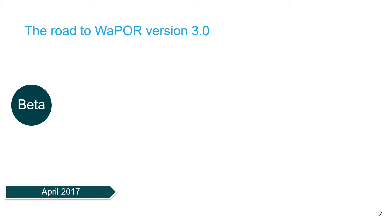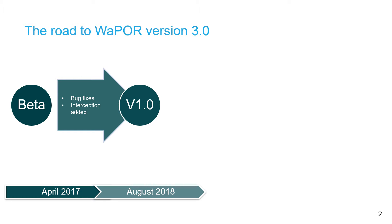The first version of the WAPOR data, the BETA version, became available in 2017, starting with the continental scale. Over the following months, the country-level data and first high-resolution areas were added. This BETA version was evaluated and tested by the WAPOR team. Initial bugs were fixed and interception was added to the evapotranspiration. The first official version was then launched in August 2018.